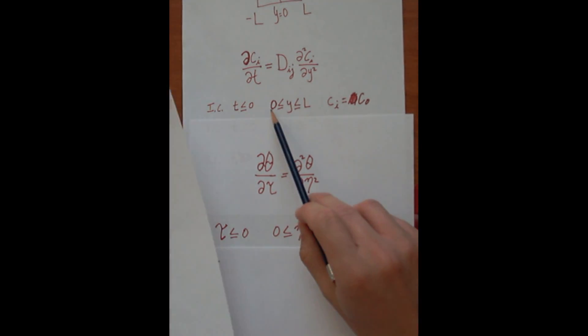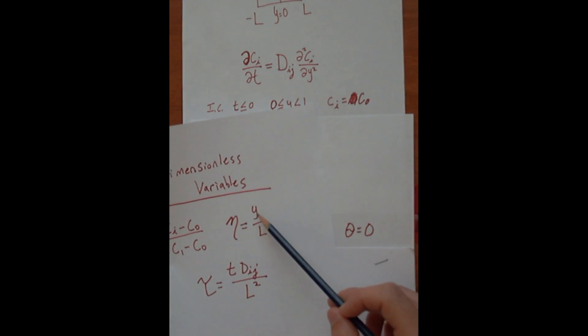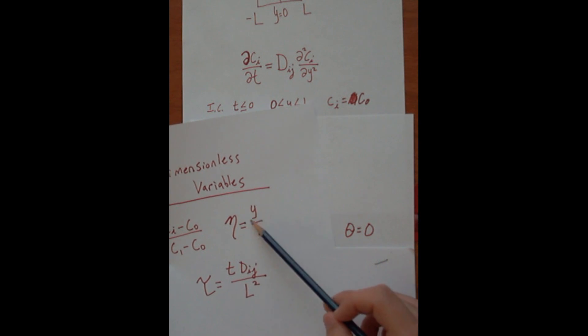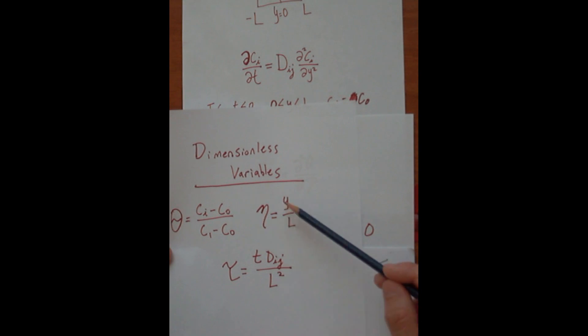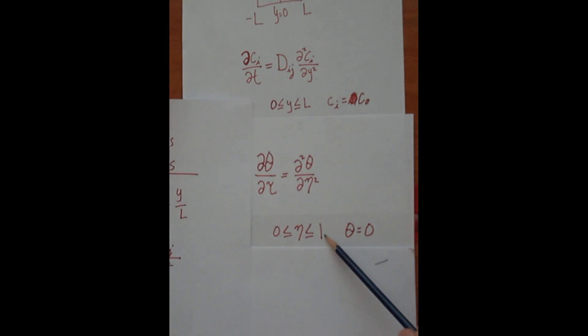Because again, if we plug in zero into this equation right here, you get eta equals zero. If you plug in L into this equation, you're going to get L over L, which is equal to one. So that's how we get from zero to one when we transform it into non-dimensionalized terms.